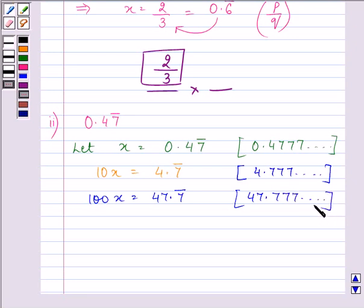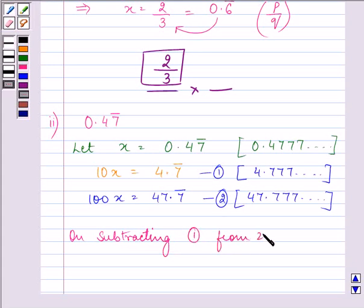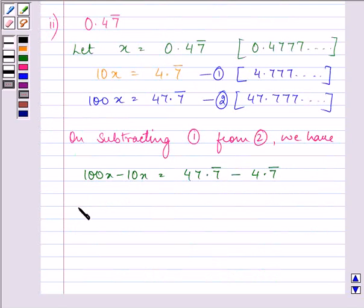Now if we carefully analyze and let this be the first equation and second equation. Now on subtracting first from second we have 100x minus 10x in the left hand side and 47.7 bar minus 4.7 bar on the right hand side. Further this will be 90x is equal to 43 which makes the answer